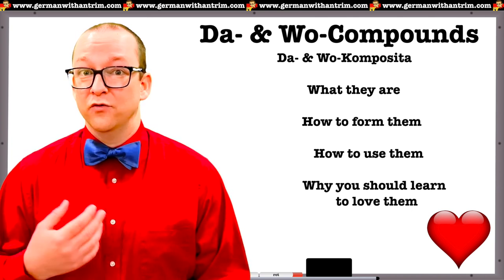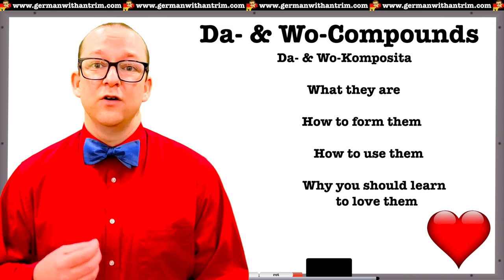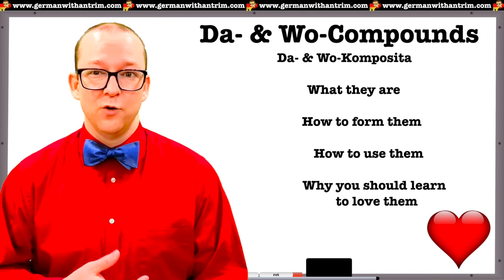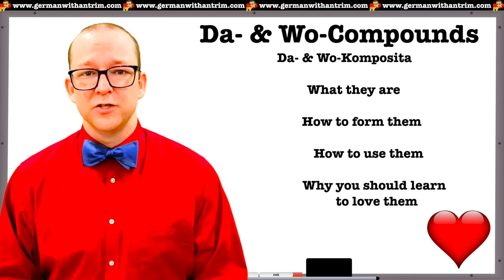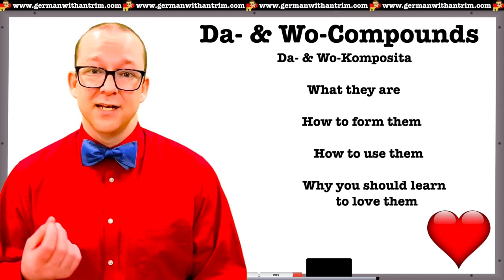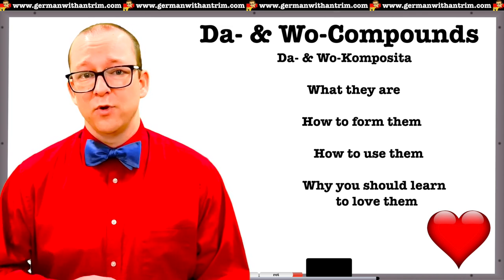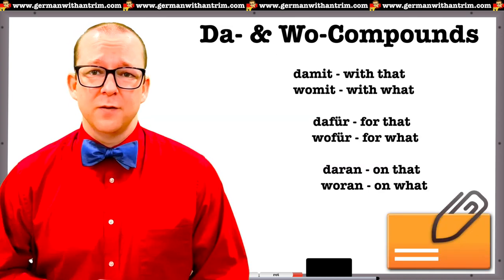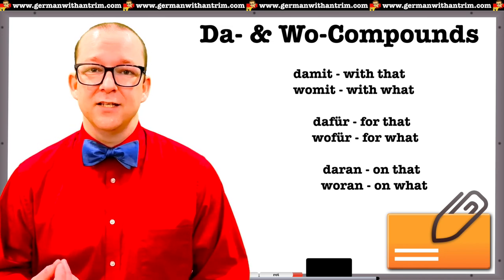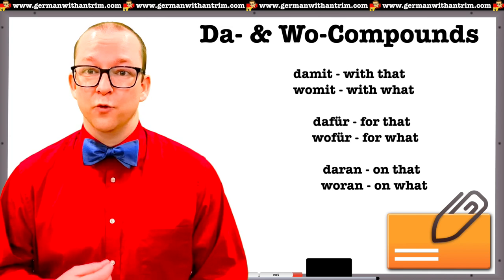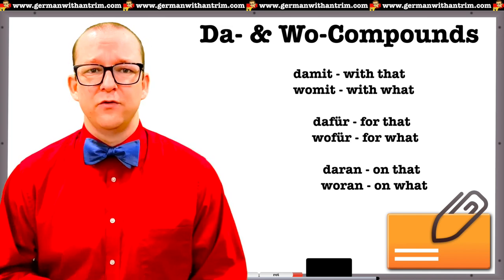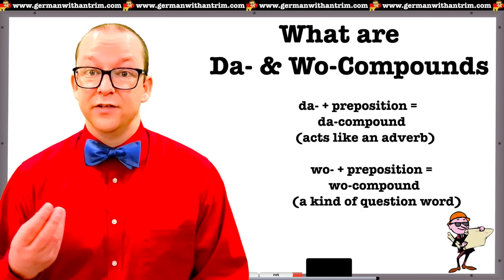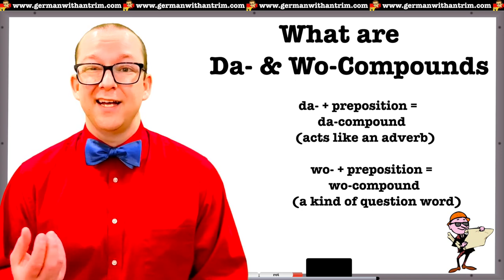Hallo Deutsche Lerner! Vollcompounds, or Vollkomposita, are a type of question word made up of a preposition and the prefix Voll. For example, you can add Mitt to Voll to make Vollmitt, which is like asking 'with what.' These kinds of question words are often taught alongside their statement counterparts, Da Compounds or Da Composita. Let's explore what these words are, how to form them, how to use them, and why you should learn to love them. These words can be formed using a large percentage of the prepositions in German. Today we'll focus on the rules and general use. These words are a combination of either Da or Voll with a preposition to create a kind of adverb.